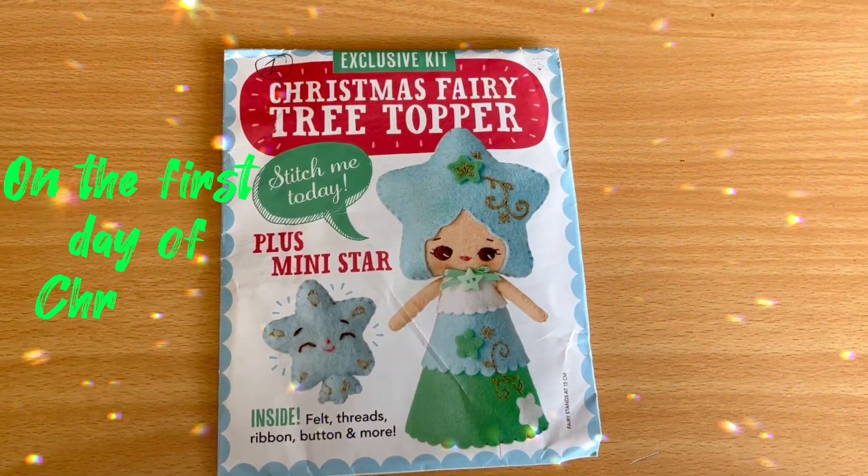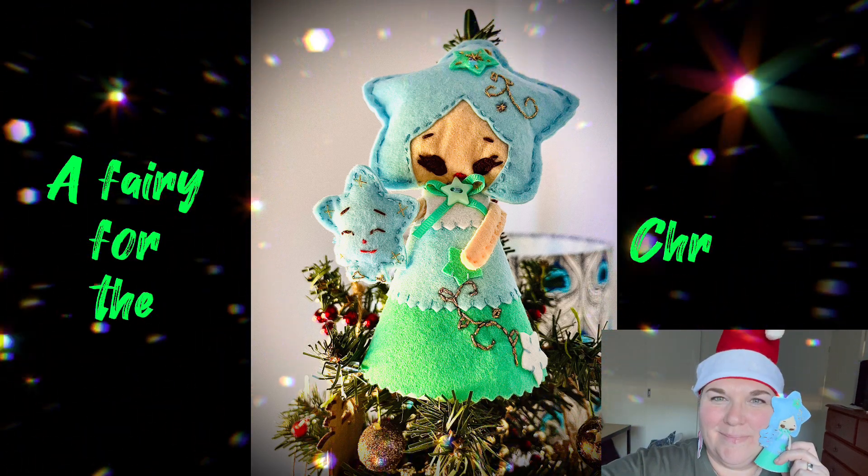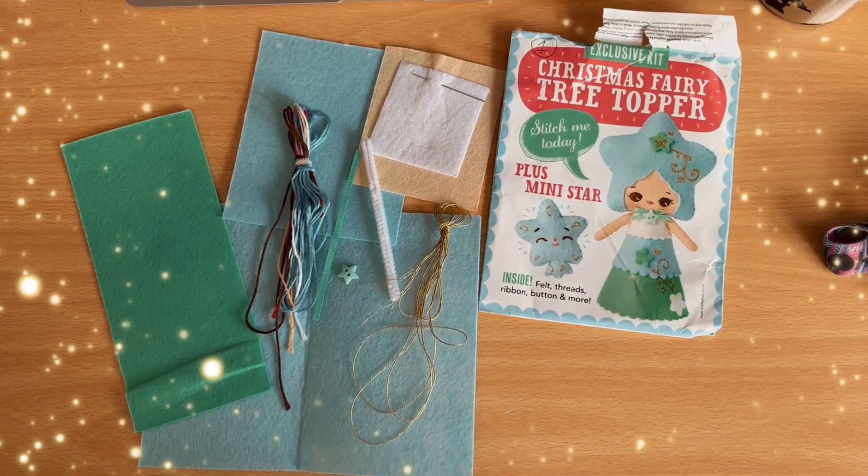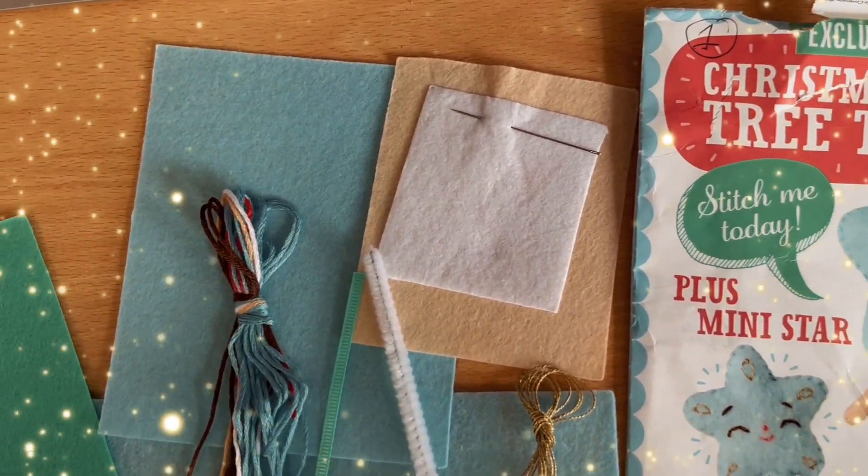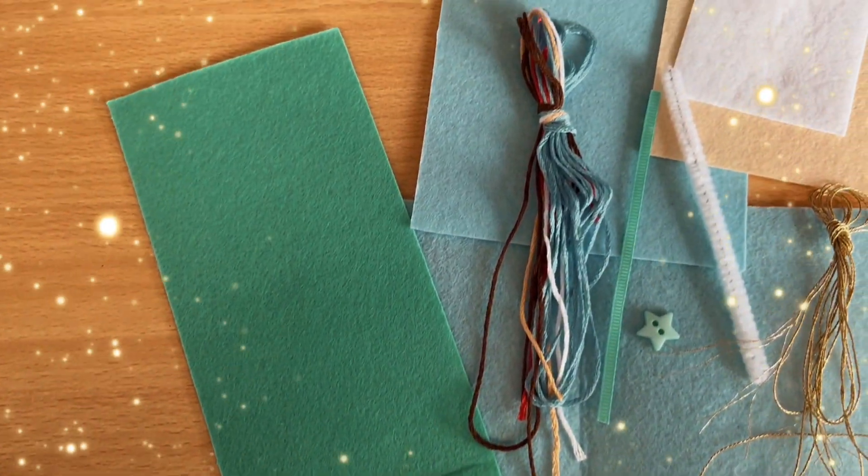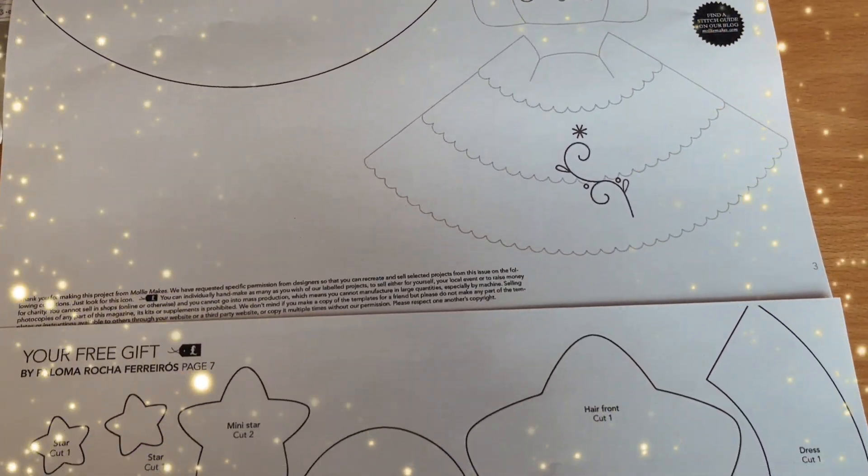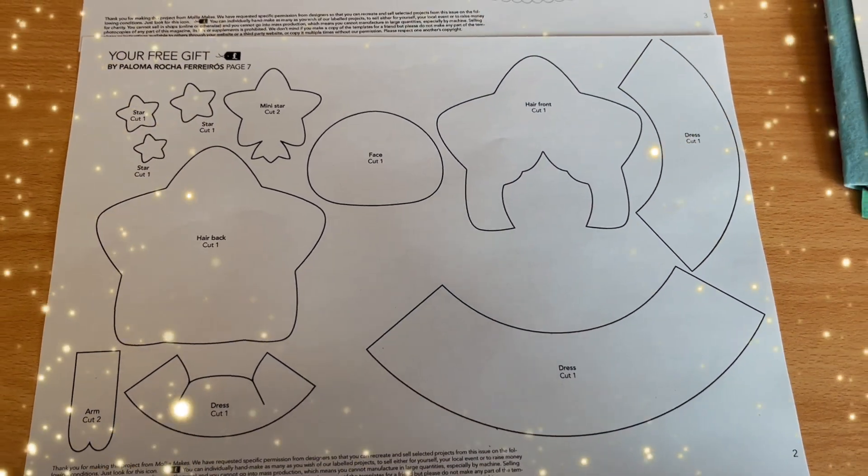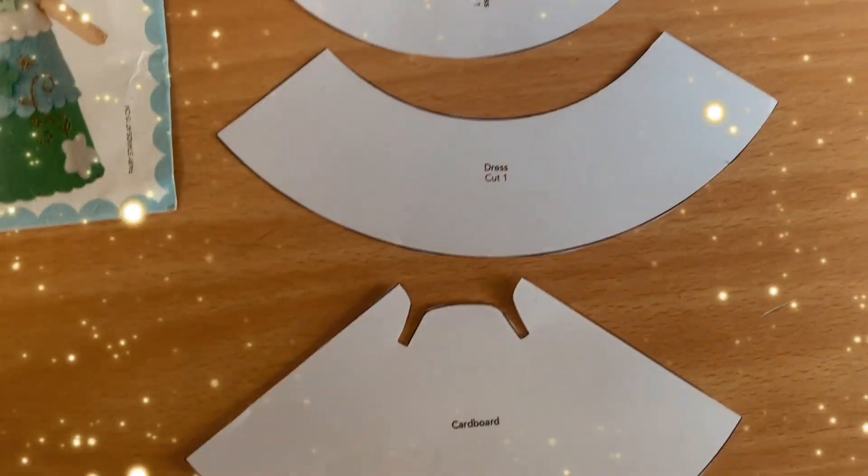On the first day of Christmas, something made by me, a fairy for the Christmas tree. In the kit we have for the Christmas fairy tree topper various colors of felt: light blue, turquoise, green, a pale skin color, and white fabric with a little star ribbon, various colored threads, and a pipe cleaner. Here are the templates, so you print them, download them from Molly Makes magazine, and cut them all out individually.